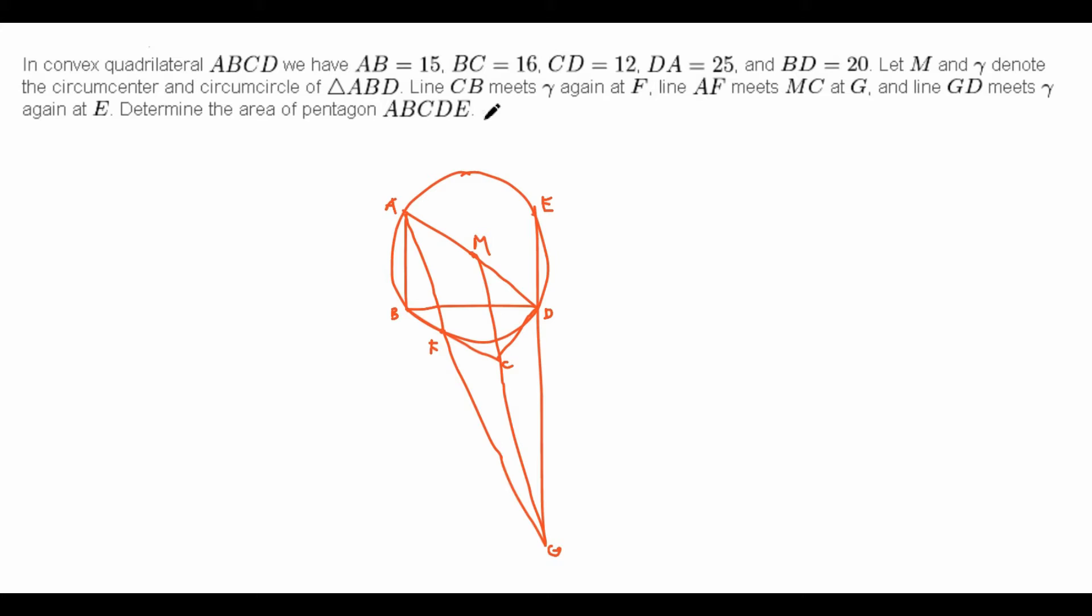For example, let's look at triangle ABD, since we have to draw a circumcircle around it anyways. AB equals 15, BD equals 20, and AD equals 25. Do these numbers look familiar? They should, because they're simply the 3, 4, 5 triangle multiplied by 5. So, because of this fact, we know that angle ABD is in fact 90 degrees.